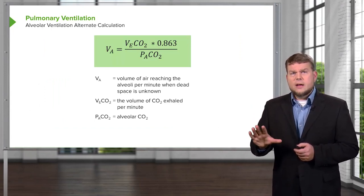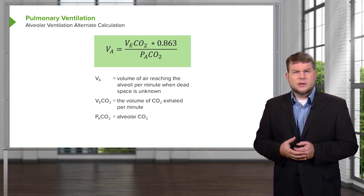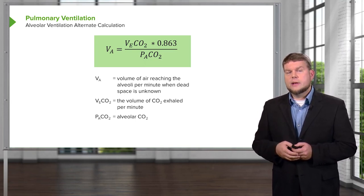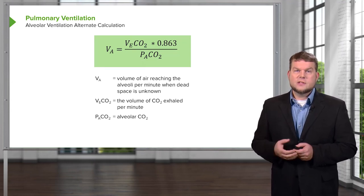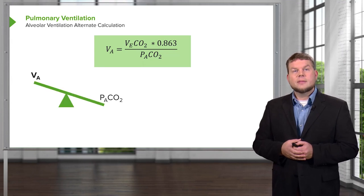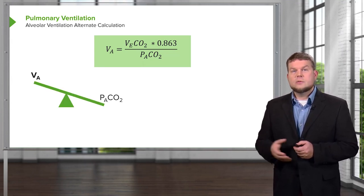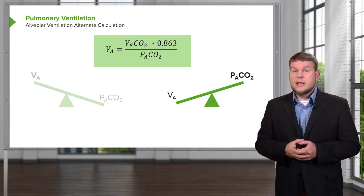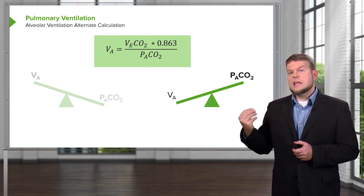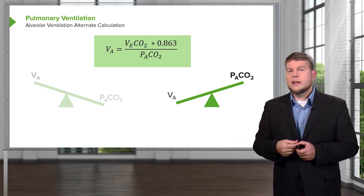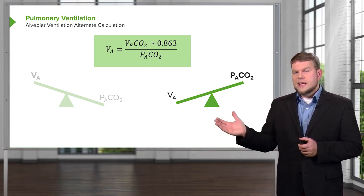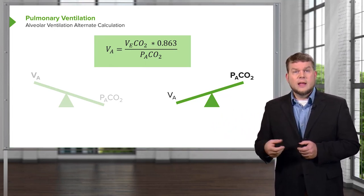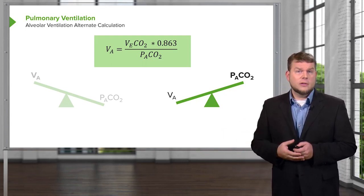There are ways to calculate this in a more complex manner, but the key relationship to understand is that alveolar ventilation and CO2 are inverse of each other. If alveolar ventilation goes up, CO2 goes down. If CO2 goes up, alveolar ventilation goes down. Clinically, if someone has a high CO2 in their blood, you automatically know their alveolar ventilation rate is low — and if CO2 is low, alveolar ventilation rate is high.